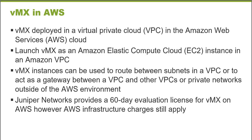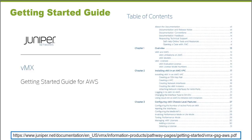You still have to pay the Amazon Web Services infrastructure charges, but for 60 days there are no Juniper Networks software licensing payments required. There's a getting started guide to show you how to get the virtual MX up and running inside of the Amazon Web Services environment. This is the document I used to learn how to do this myself — it's a very short document, about 20 or 30 pages, and you should be able to get your virtual MX up and running right inside of your virtual private cloud.